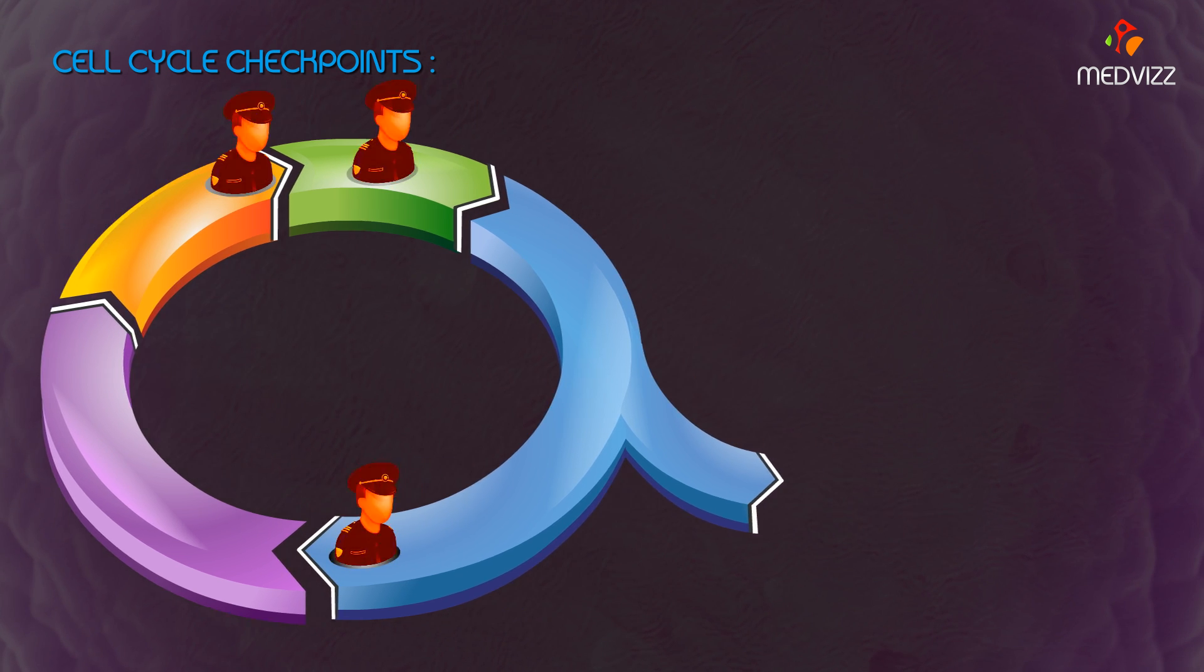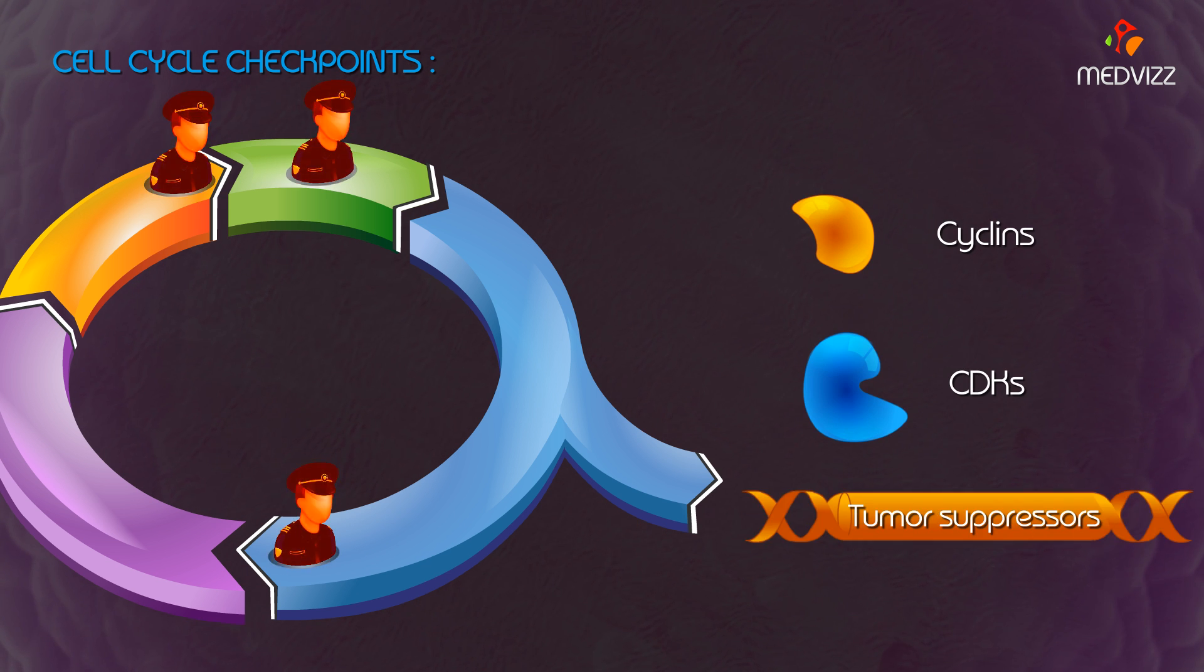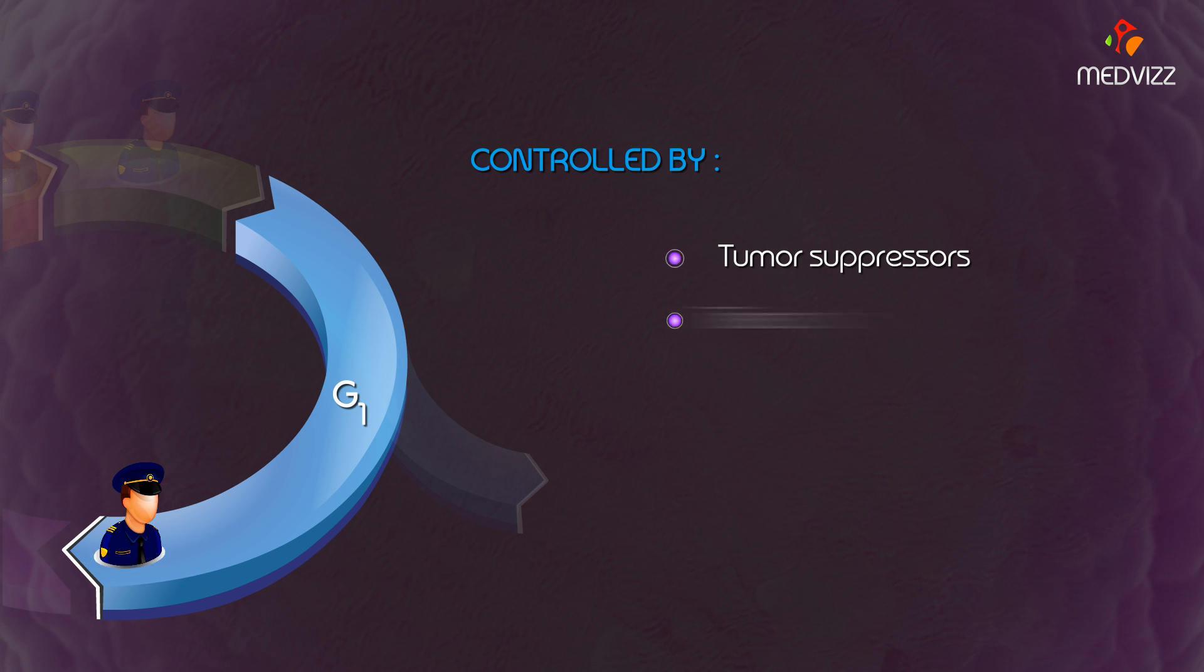Progression through checkpoints is regulated by cyclins, cyclin-dependent kinases, and tumor suppressors. During the G1 phase, cell cycle progression is controlled by various cellular mechanisms such as tumor suppressor genes that code for transcription factors and proteins.